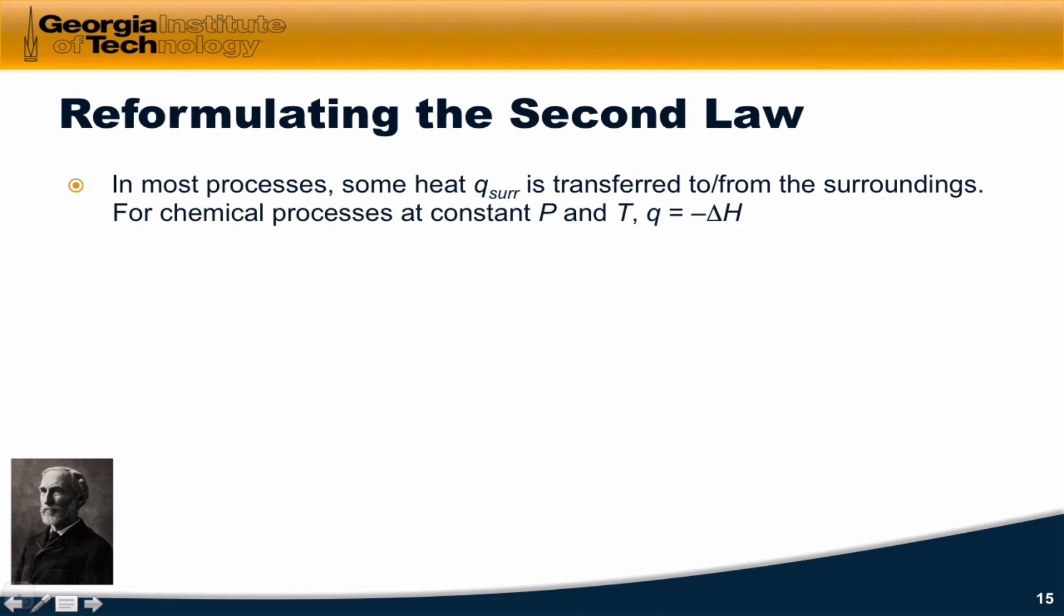To begin thinking about this, let's go back to this idea of entropy change as energy dispersed or reversible heat divided by temperature. In most processes, some heat q_surroundings is transferred to or from the surroundings. For chemical processes at constant temperature and pressure, this heat transfer is equal to the negative of the enthalpy change within the system, negative delta H.